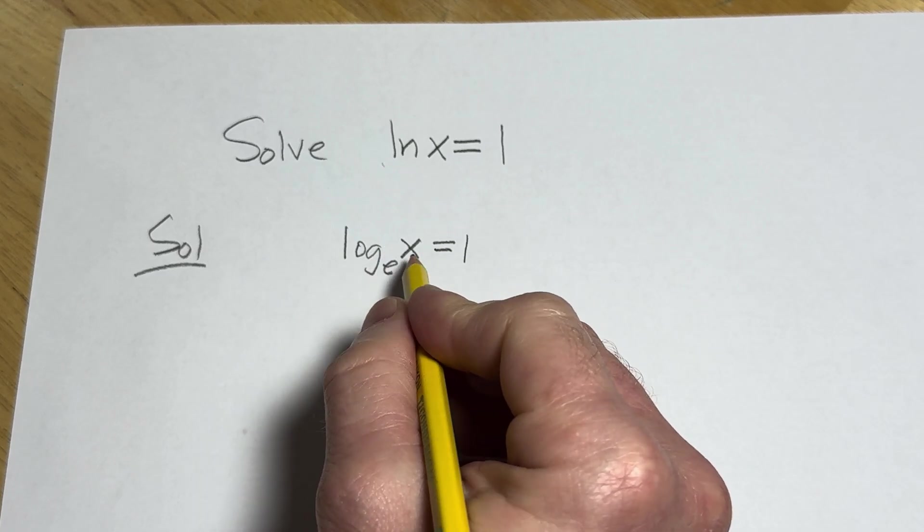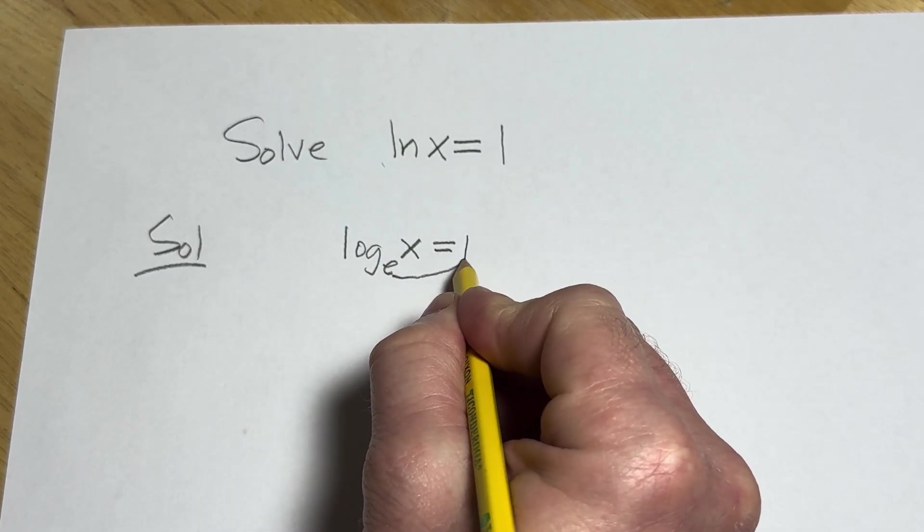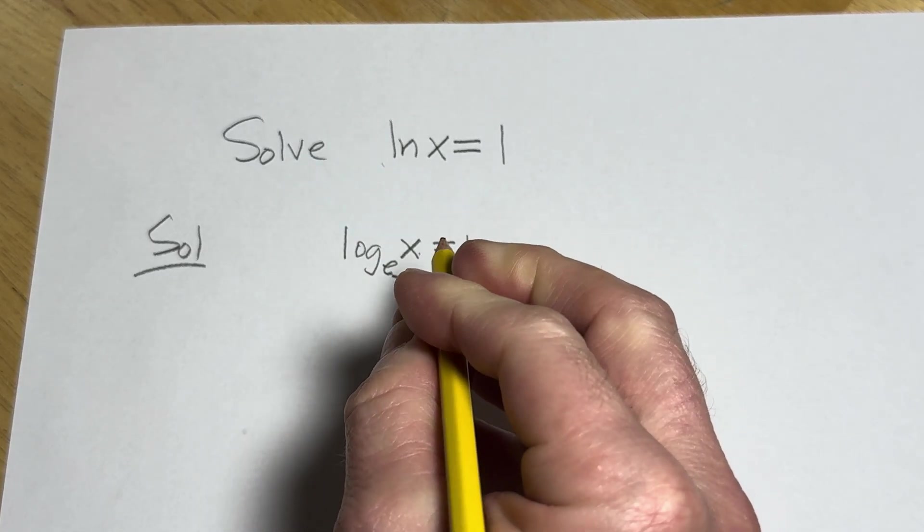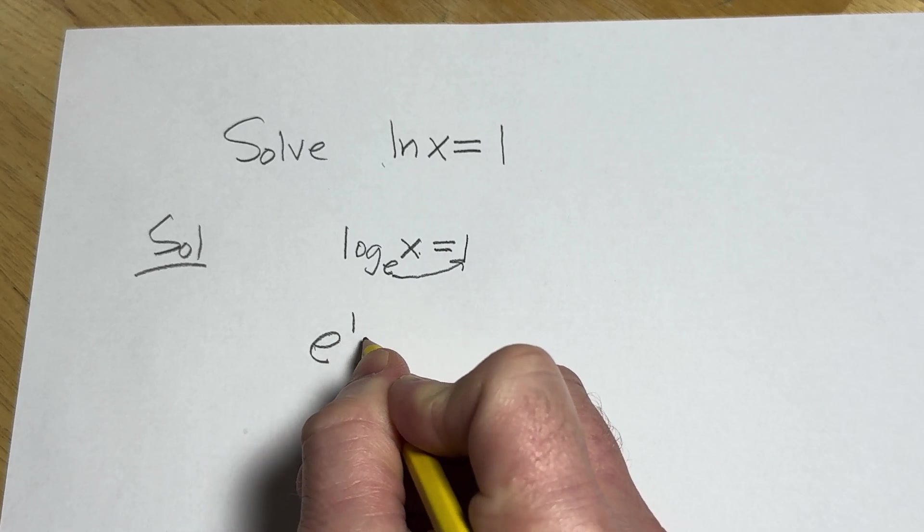And then you use the properties. So this is e to the first power equals x.